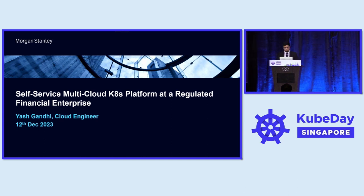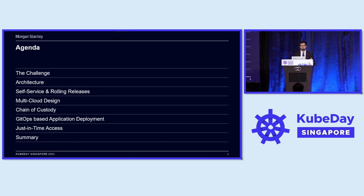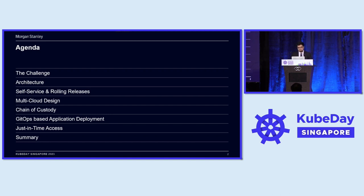The talk is largely focused into three areas. The first one is what challenge we're trying to solve, the architecture of how we've built the self-service platform, and how we've made it in a multi-cloud manner. Then I'm going to talk about the security aspects of building such a platform, and then how application developers go on and actually deploy applications on those clusters. Let's take a look at it step by step.